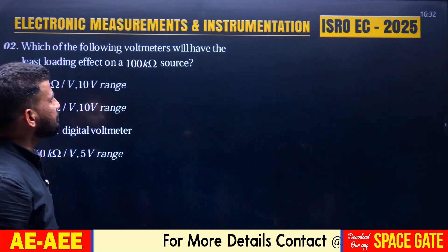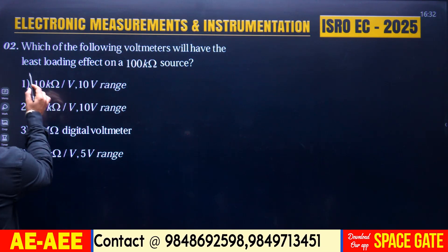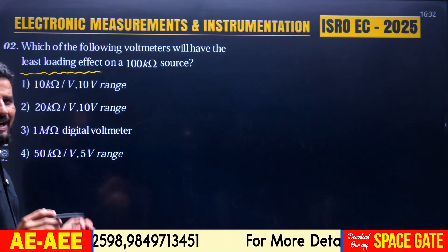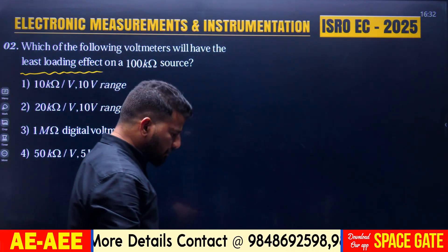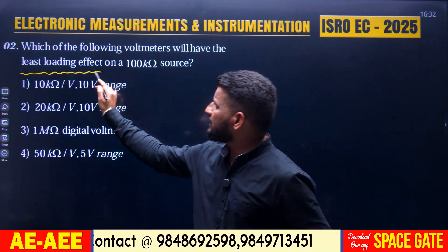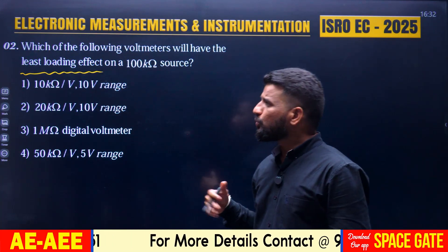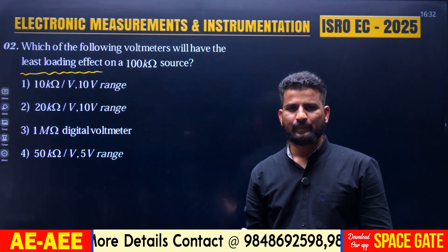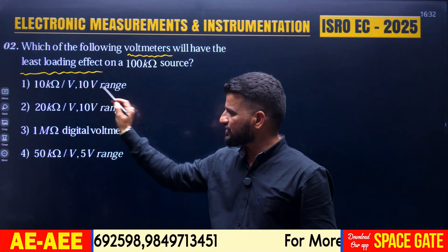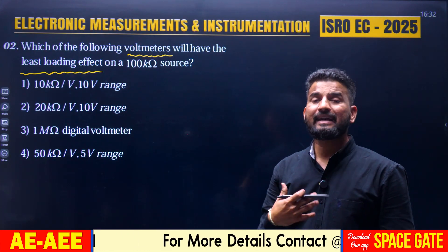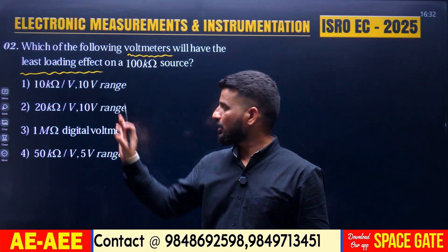Next, let us look at the next question with respect to measurements. Which of the following voltmeters will have the least loading effect on a 100 kilo-ohm source? There are four different voltmeter options. The least loading effect is possible with a high resistance voltmeter — our requirement is to identify which among the four voltmeters has the highest resistance.